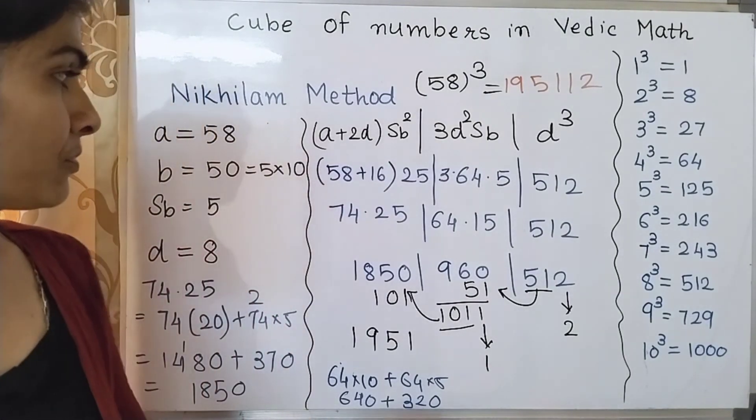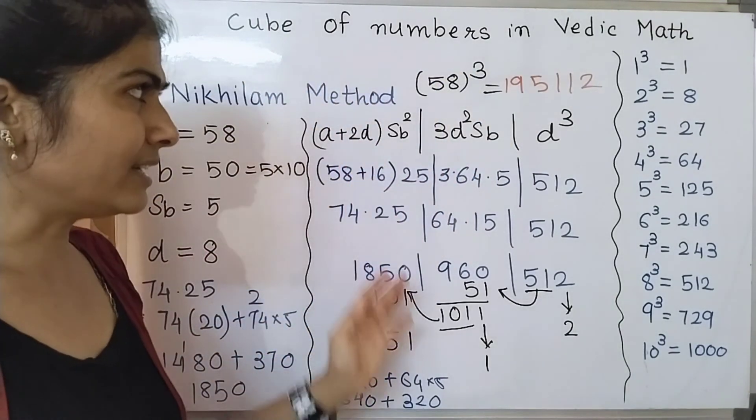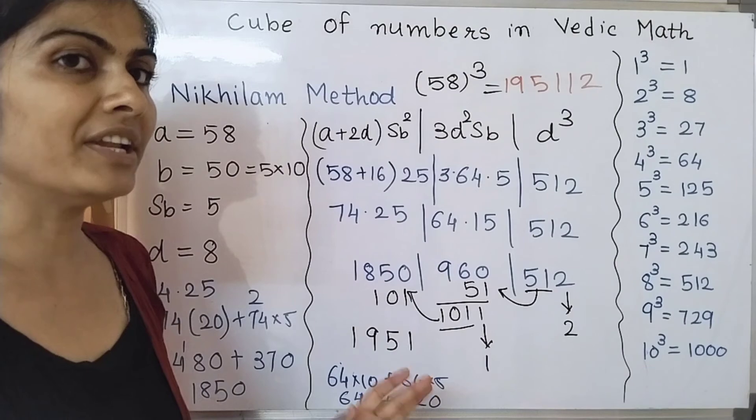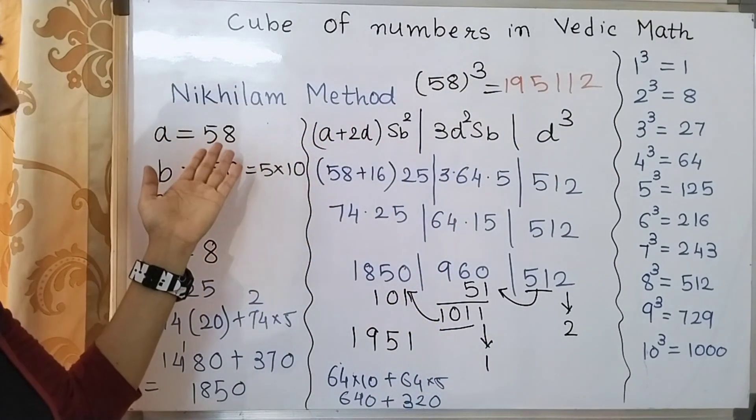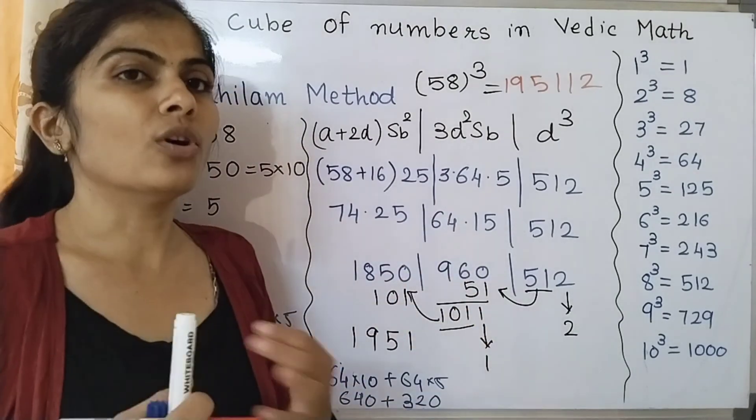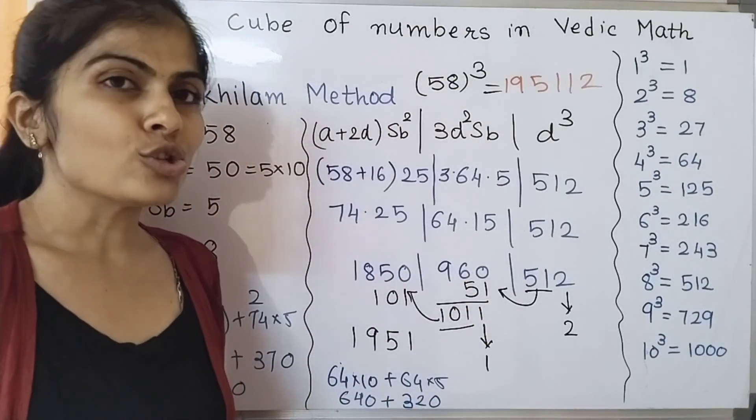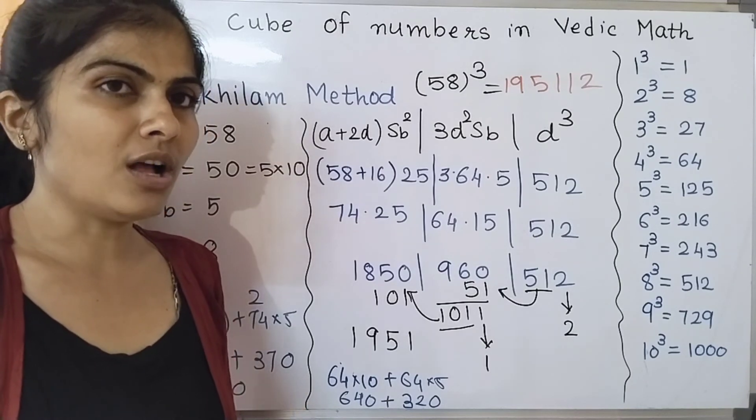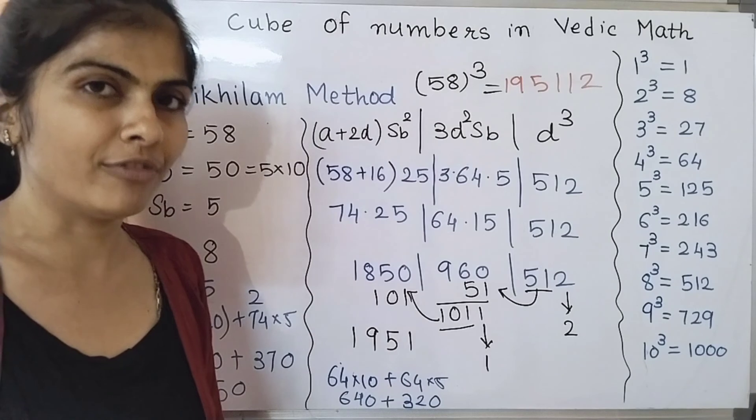You can check it with calculator. So now here you can see that we have overcome the limitations of the Yavdanam method in which you can do only if the number is closer to multiple of 10. Now even if the number is 58 or 72 or 95 anything, then also you can follow this method. So hope you have understood all the methods of the Vedic method how to find cube of numbers.